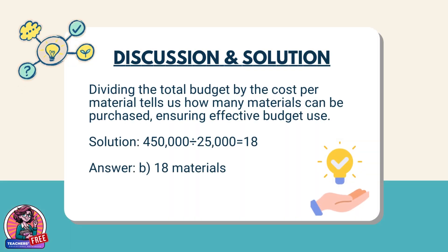Discussion: Dividing the total budget by the cost per material tells us how many materials can be purchased, ensuring effective budget management. Solution: 450,000 ÷ 25,000 = 18. Answer: B. 18 materials.